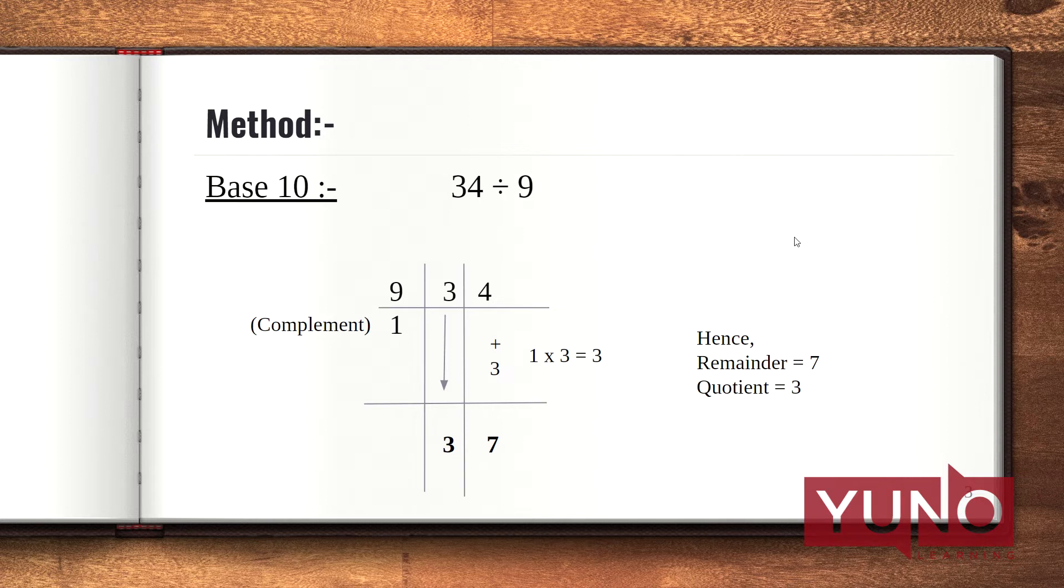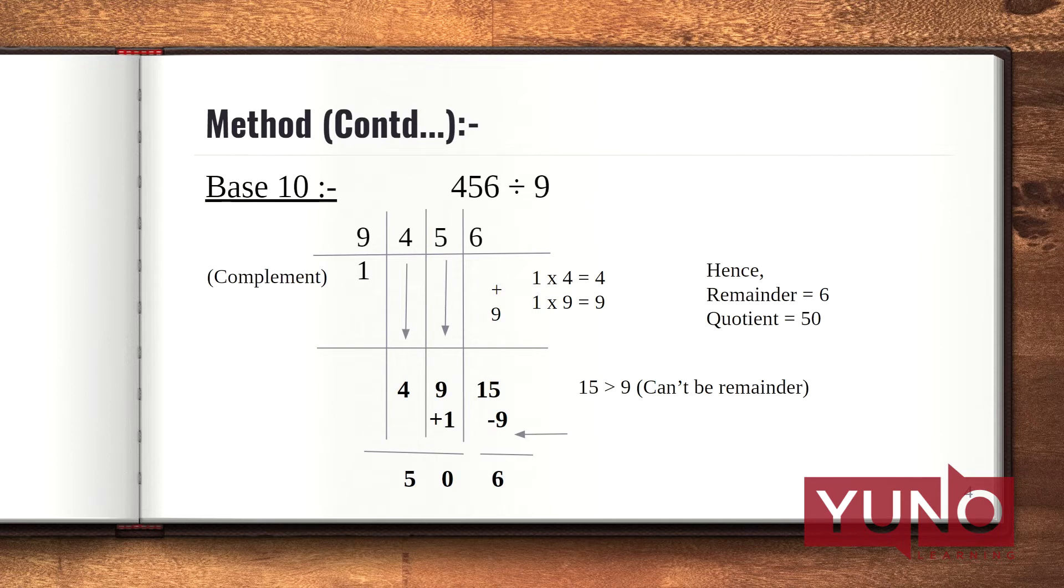Now let's come to the next example. Here, we have base 10 itself, but the question is to divide 456 by 9. The first step is we need to divide the digits by equal number of zeros the base has. Since there is 1 zero, I have divided the digits with 1 partition. Starting from the left, I have copied down the first digit of my dividend as it is and written the complement of 9 below, which is 1.